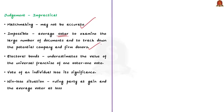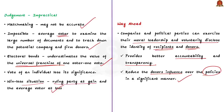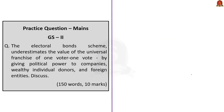As per the author, electoral bonds give political power to companies, wealthy individual donors, and foreign entities, and thereby undermine the value of universal franchise — one voter, one vote. If companies begin to influence policies through hidden donations, there are higher chances for the vote of an individual to lose its significance, leading to win-lose situations with the ruling party at gain and the average voter at loss. The author concludes by suggesting that companies and political parties exercise their moral leadership and voluntarily disclose the identity of recipients and donors, as such a measure provides accountability and transparency and reduces donor influence over policies.